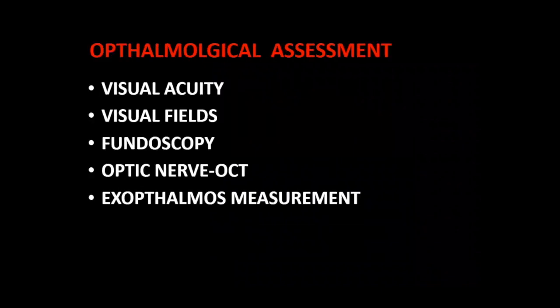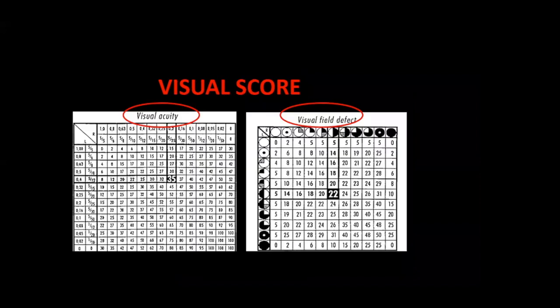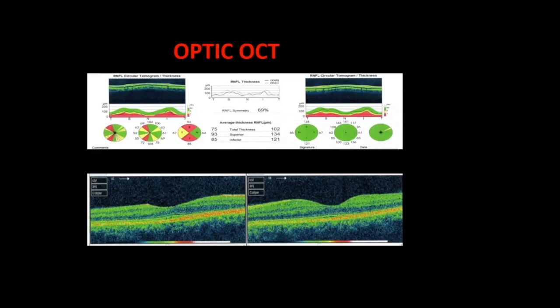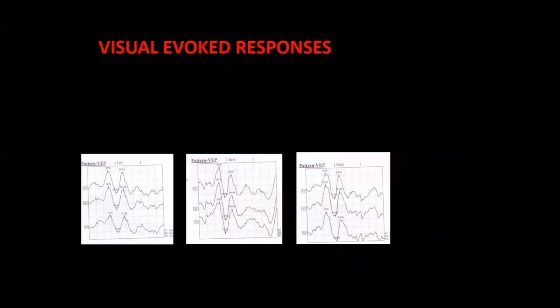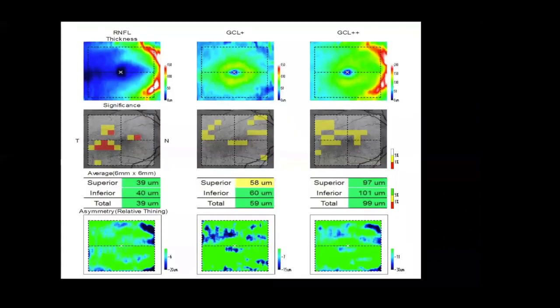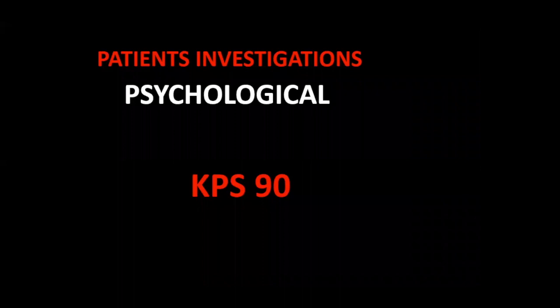For all patients we do full ophthalmological assessment including visual acuity, visual fields, color vision, fundoscopy, optic nerve assessment, and we look for exophthalmos. We use the Goldman score combining visual acuity and visual fields to give a score, done before and after surgery. We do optic OCT to assess for optic nerve atrophy. Sometimes we resort to visual evoked responses. We also do psychological testing — the Karnofsky performance scale for all patients going through cranial surgery.